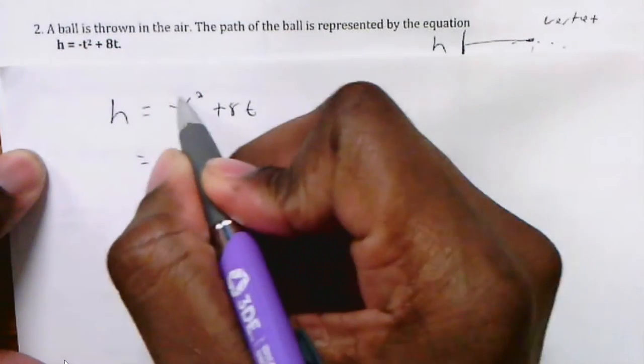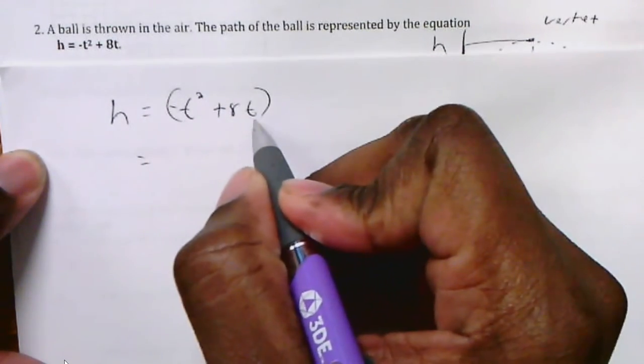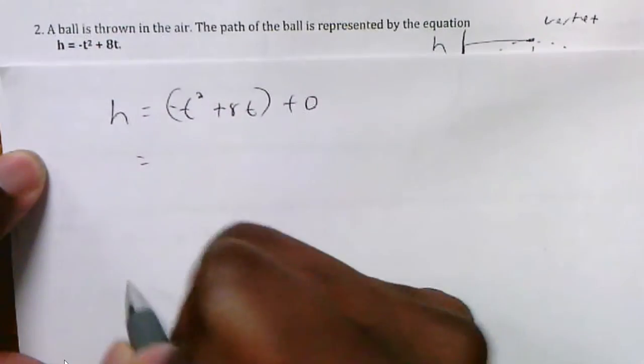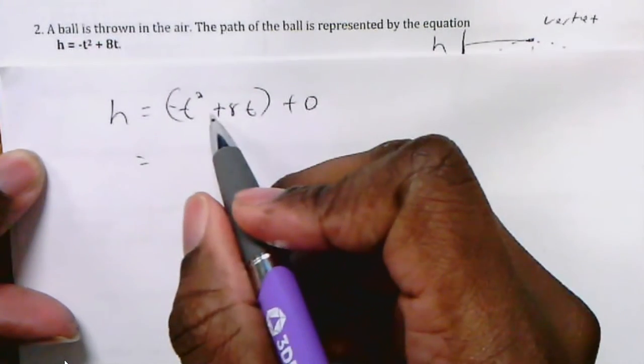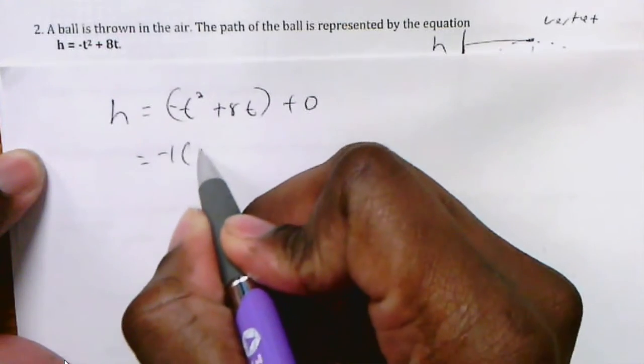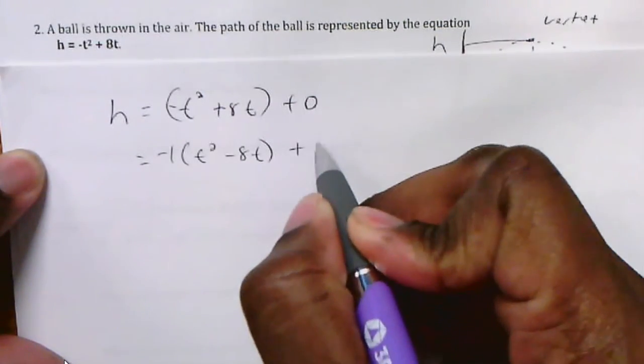I would group these two in parentheses. There's no number outside so you can put plus 0 out there if you want. So if you group those in parentheses, you can now see that the a value is negative 1. If I factor out a negative 1, I get t squared take away 8t plus 0.